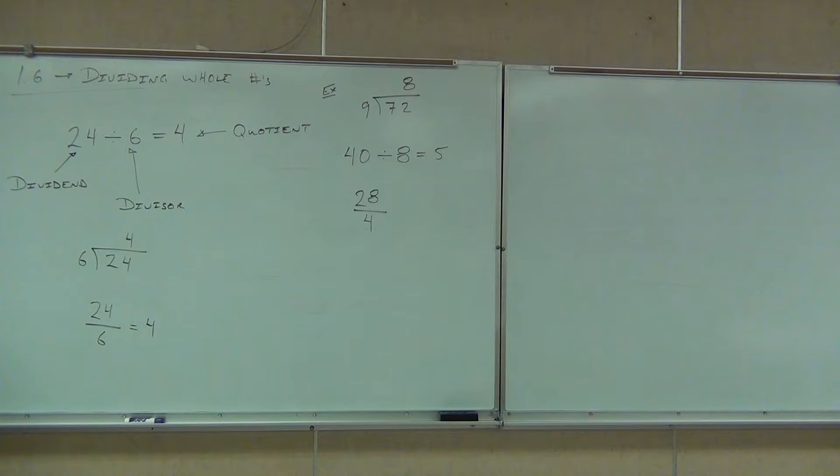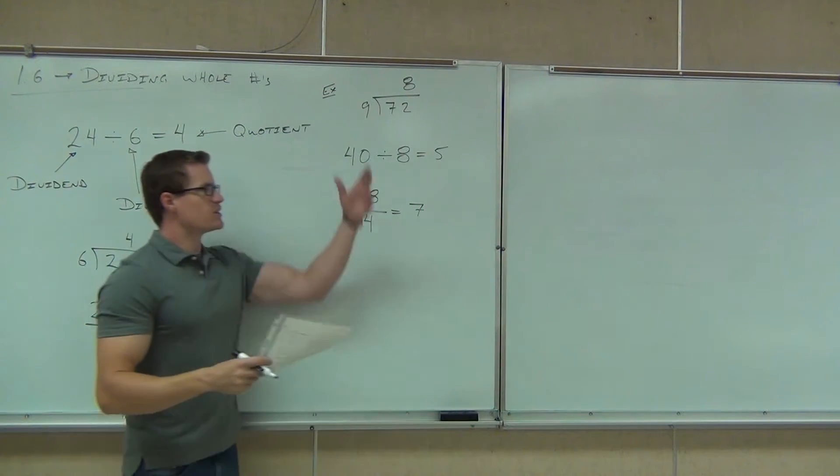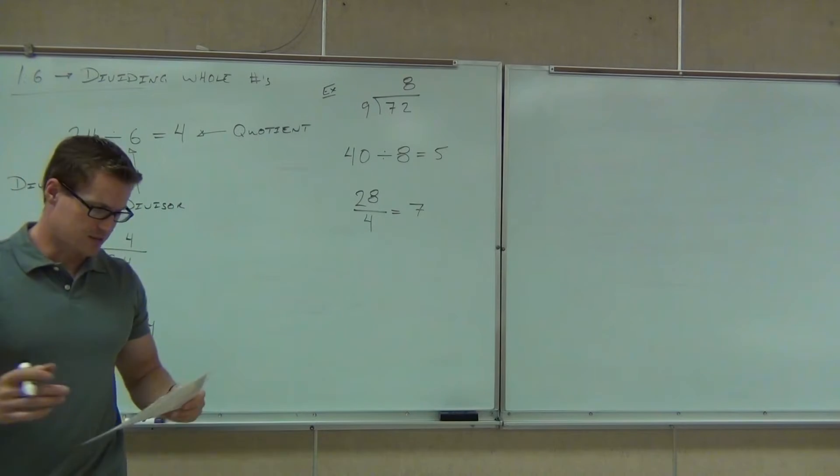Good. What's the answer going to be? Our quotient? Seven. So each of these mean division. We can identify the names of each part, and we can do these problems as they are.